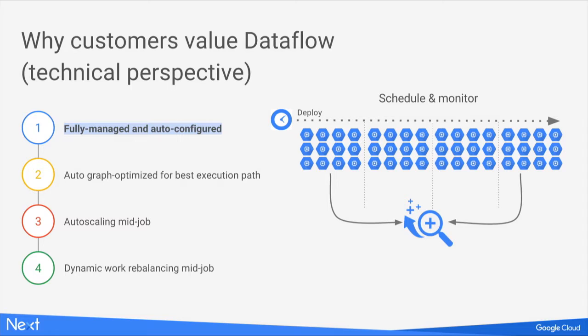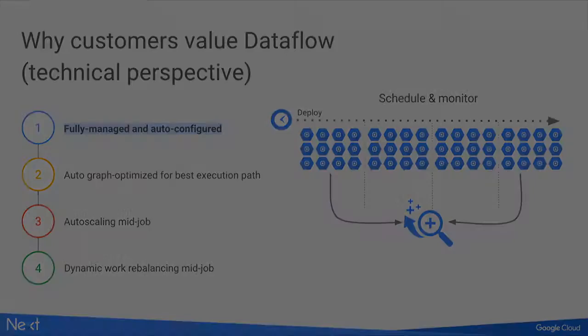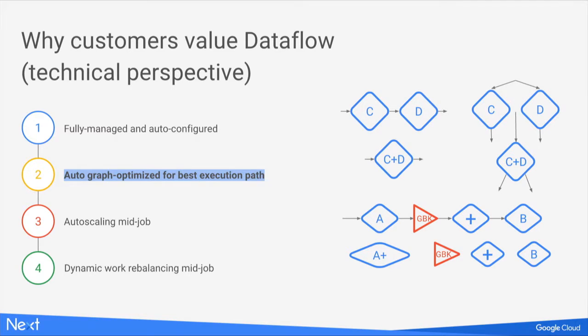I wanted to highlight four specific technical benefits of Cloud Dataflow. First, full management: we create workers for you, split your data inputs into smaller shards, and allocate them to workers. We also do optimizations of your execution code — you can think of pipelines as activity diagrams with bubbles of transformations and data flowing between them. You submit your pipeline graphs to us and we optimize the execution, sometimes merging steps together for efficiency, sometimes splitting them to achieve higher parallelism.